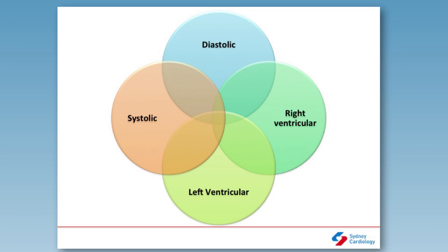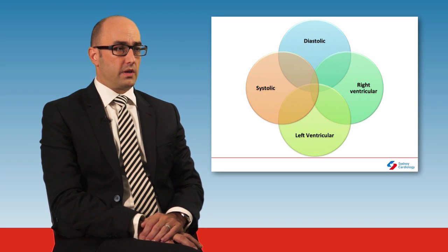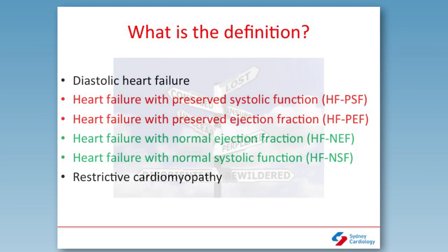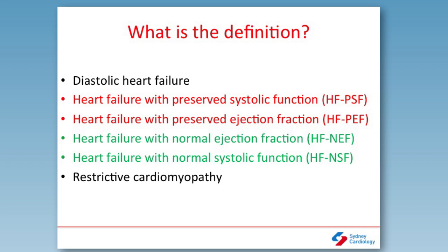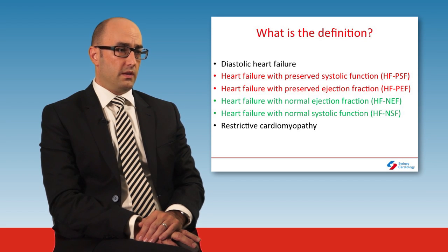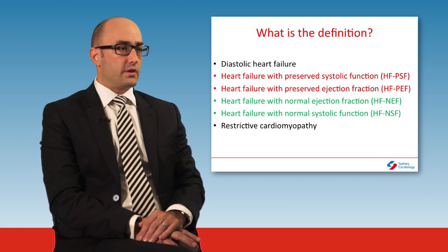When talking about heart failure we must think about the left and right ventricle and whether it's diastolic or systolic. In this presentation today we are concerning ourselves with left ventricular diastolic heart failure. Sometimes it has been called heart failure with preserved systolic function and also heart failure with preserved ejection fraction. I personally disagree with these terms because no one has been able to decide on what the definition of 'preserved' is — it is sometimes classified as ejection fraction of 35%, 40%, 45%, or 50%. But true diastolic heart failure means you must have a normal ejection fraction of 55% or above. That is why I only ever use the terms heart failure with normal ejection fraction or heart failure with normal systolic function.